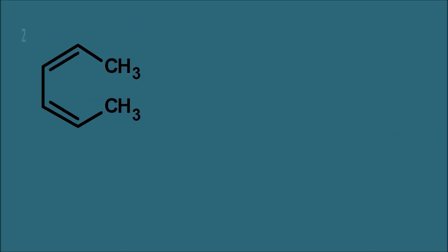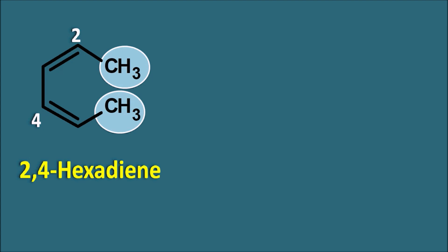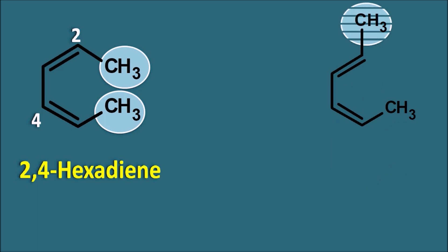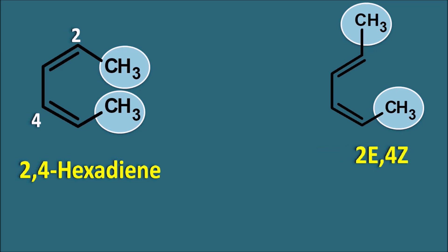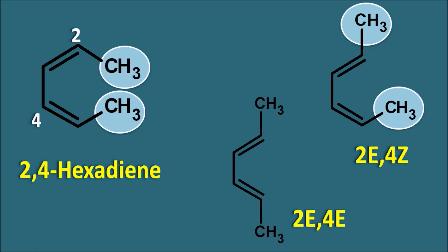We have already seen 2,4-hexadiene — this is the second carbon and this is the fourth carbon. The first double bond is attached with one methyl group and similarly the second double bond is attached with another methyl group. Based on the orientation of these methyl groups, 2,4-hexadiene can exist as different isomers. In one isomer the methyl group is on the opposite side of the double bond — we indicate this by the letter E. If the methyl group is on the same side of the double bond, we indicate it by the letter Z. So according to E/Z nomenclature, this molecule can be represented as 2E4Z (E at second position, Z at fourth position) or as 2E4E (both methyl groups opposite to the double bond).